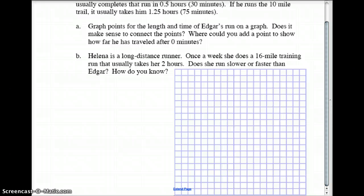On the other hand, you've got letter B. Maybe do this in pen or a different color or something. Helena is a long distance runner who can jog 16 miles and it takes her about two hours.